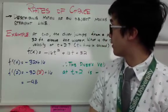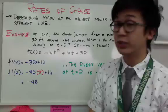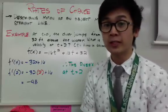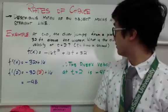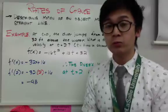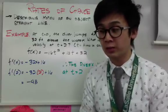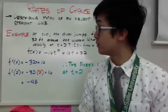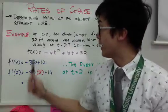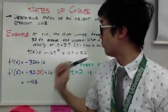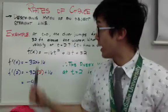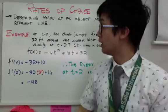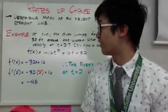In this case, at t equals 0, the diver jumps from a platform 32 feet above the water. What is the diver's velocity at time equal to 2 seconds, where t is time in seconds? Every time you have a word problem in calculus that uses derivatives, and especially in rates of change, you will always be given a function. In this particular word problem, the function we're using is f(x) = -16t² + 16t + 32. This is the diver's function as he or she hits the water diving from a 32-foot platform.